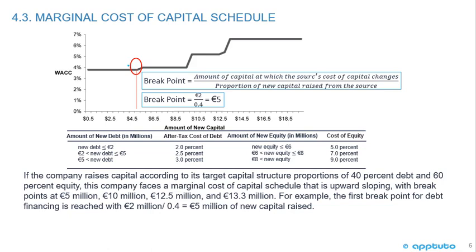The last thing to examine is the breakpoints — where the weighted average cost of capital changes. The formula is: breakpoint equals the amount of capital at which the source's cost of capital changes, divided by the proportion of new capital raised from that source. With a 40% debt and 60% equity target structure, the breakpoints occur at 5 million, 10 million, 12.5 million, and 13.3 million euros. For example, the first debt breakpoint is 2 million divided by 0.4, which equals 5 million — confirming the first breakpoint on the schedule.